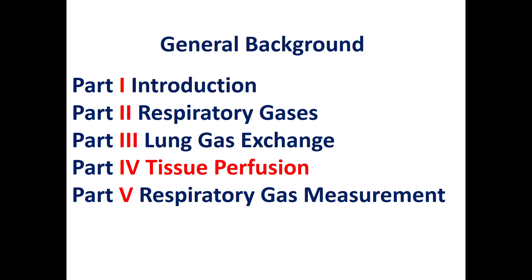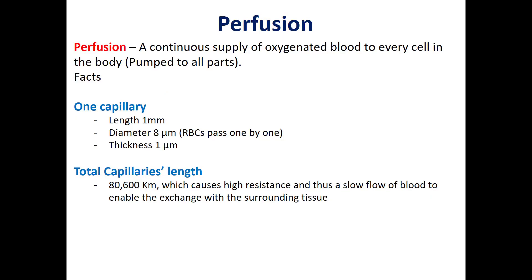The cardiovascular system transports oxygen to the tissue and removes CO2. This is known as tissue perfusion. Tissue perfusion is simply a continuous supply of oxygenated blood to every cell in the body.